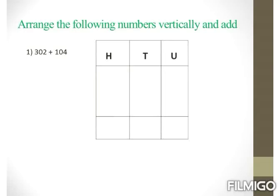Are you ready? Let's start. First we will arrange the numbers according to their places — hundreds, tens, and units. Starting with units place first: our first number is 302, so 2 in units, 0 in tens, and 3 in hundreds. Our second number is 104: 4 in units, 0 in tens, and 1 in hundreds. Adding units first: 2 plus 4 gives us 6. Tens: 0 plus 0 is 0. Hundreds: 3 plus 1 is 4. So our answer is 406.